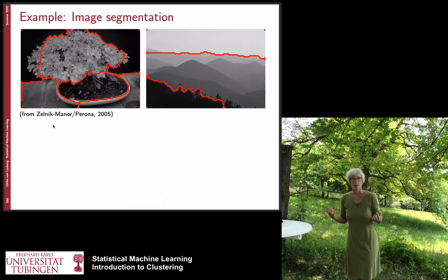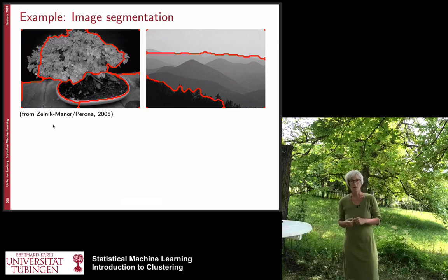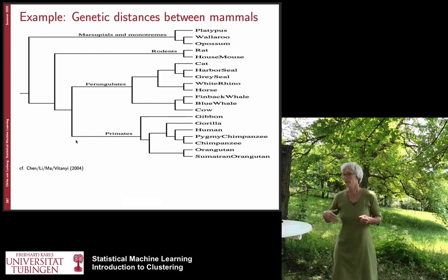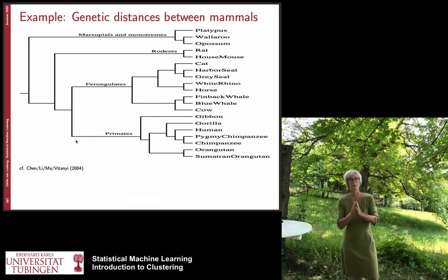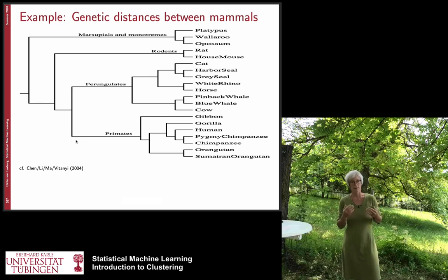Another big example is image segmentation, where you want to separate foreground from background or find different objects in your image — an apple, a pear, a person, a car. This is often solved by clustering algorithms. There also exist completely different clustering problems which try to build a hierarchy. In the previous examples — finding two groups of customers or two types of cancer — this is what we call flat clustering, where there is simply one number of clusters that we consider to be the right number.